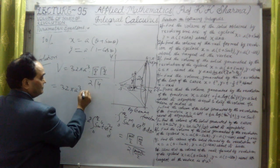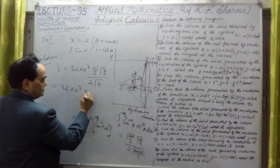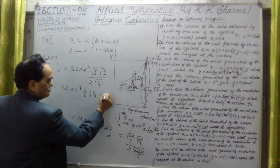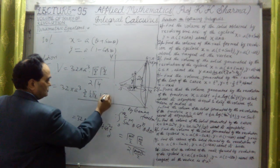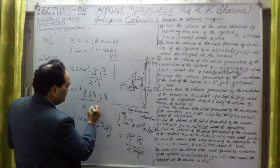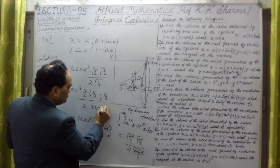32 pi a cubed, gamma 5/2 is 3/2 into 1/2 into gamma 1/2, gamma 3/2 is 1/2 into gamma 1/2, divided by 2 into gamma 4 is factorial 3, that means 3 into 2 into 1.